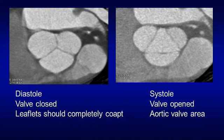Here's a nice example of a normal valve. On the left during diastole, the valve is closed and the leaflets have completely coapted. On the right during systole, the valve is open and we can measure the aortic valve area. As the valve becomes diseased, the leaflets will not close completely during diastole, resulting in aortic regurgitation, and they won't open properly during systole, resulting in aortic stenosis.